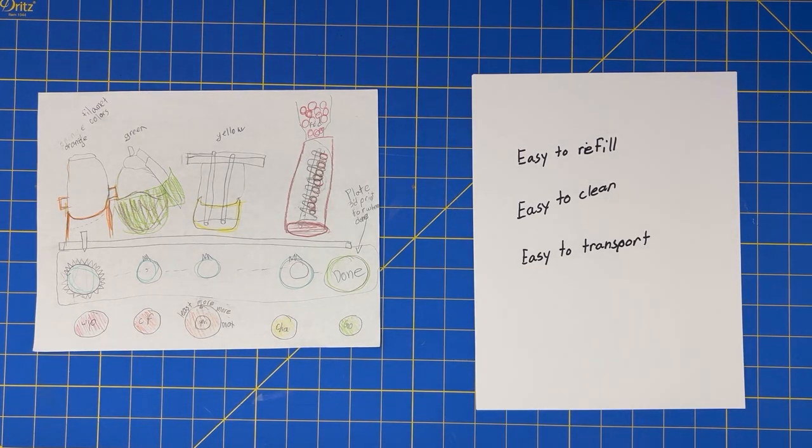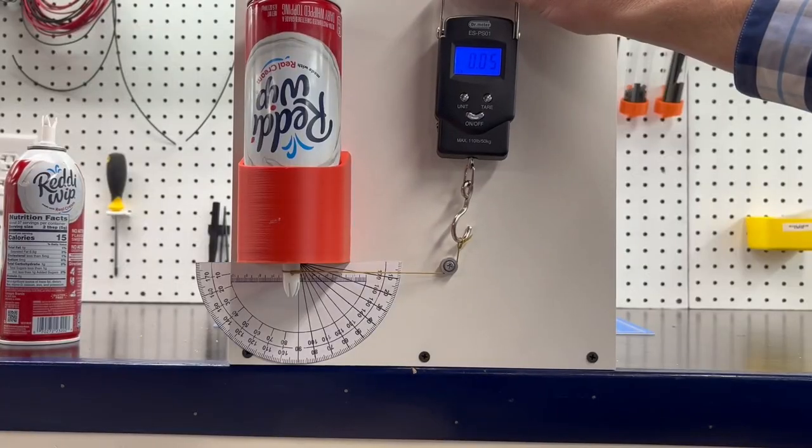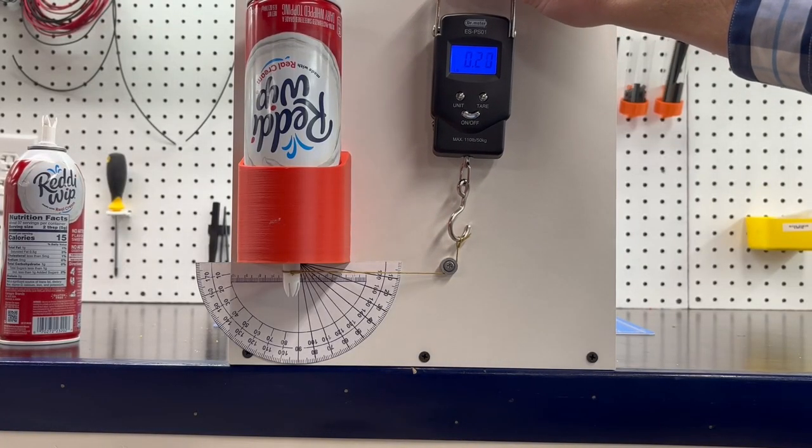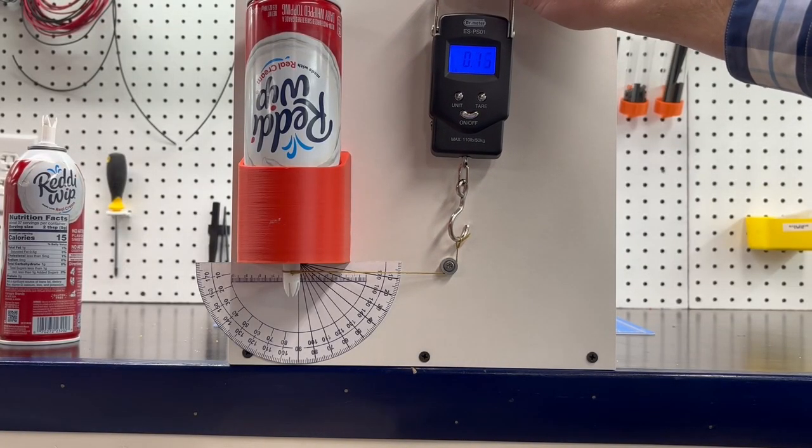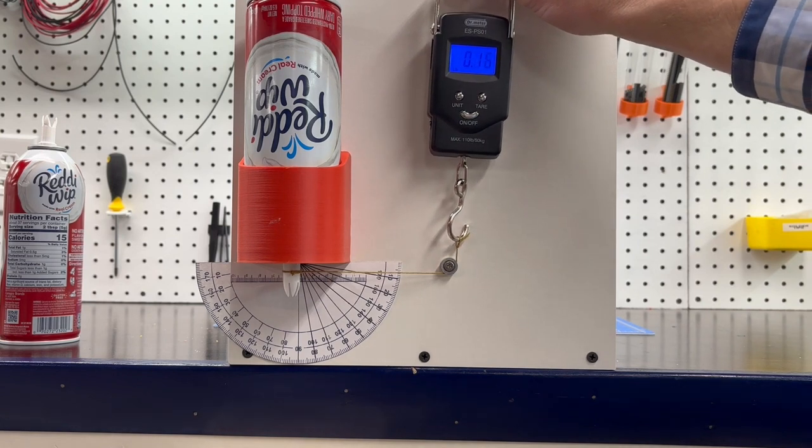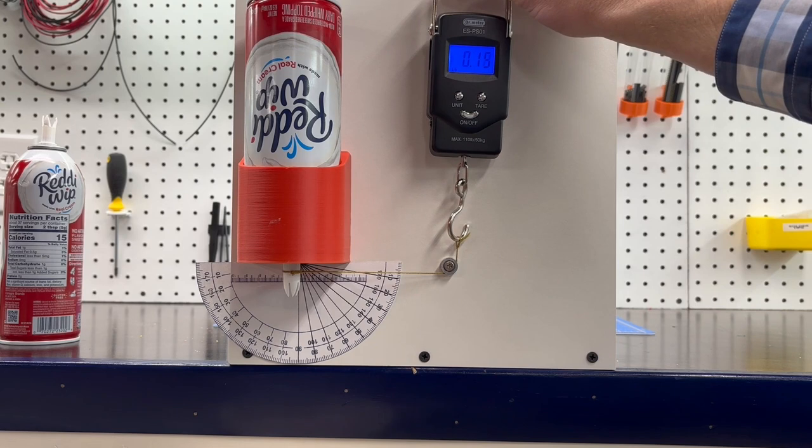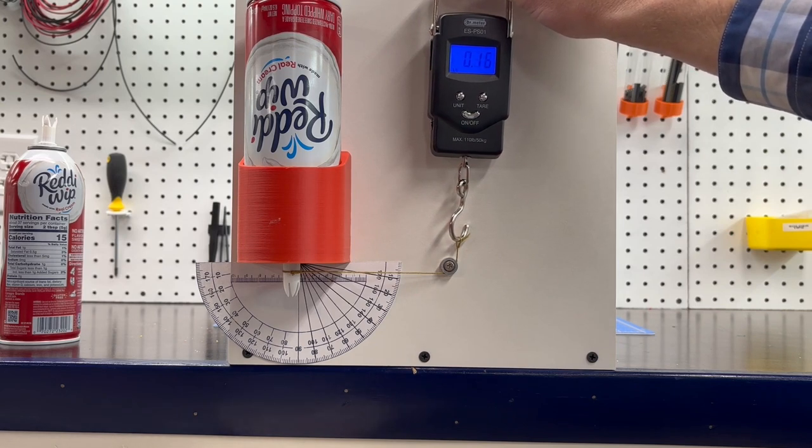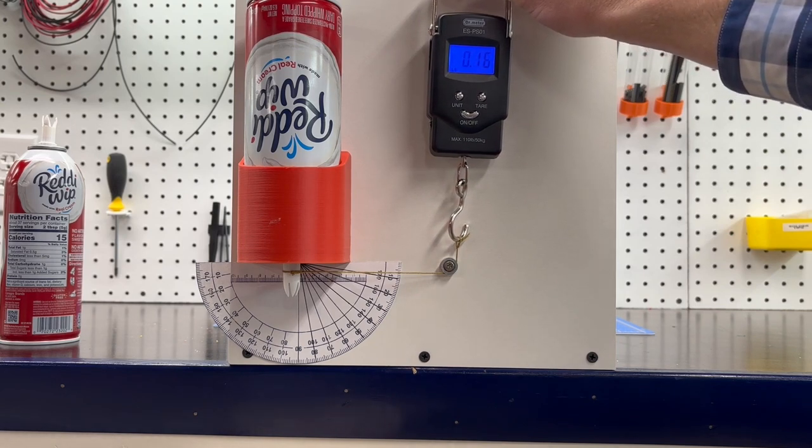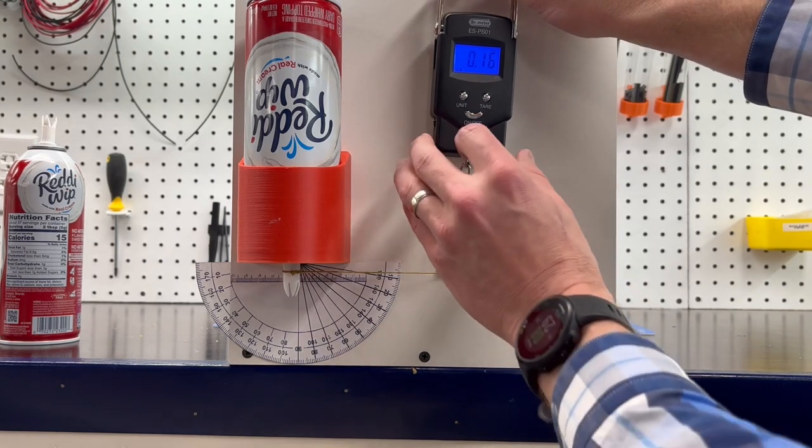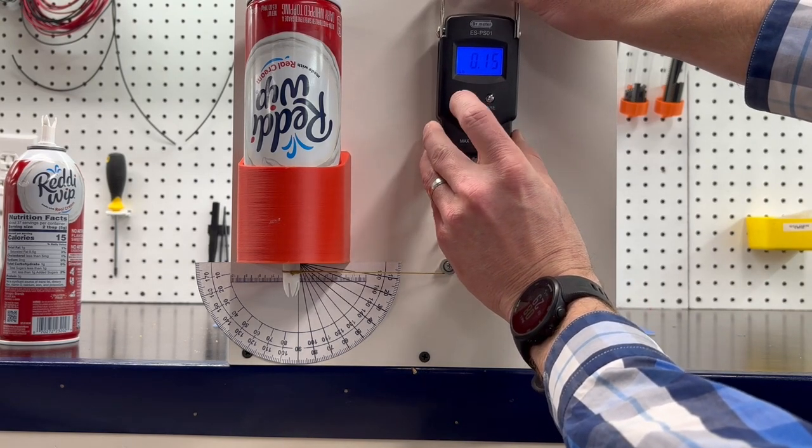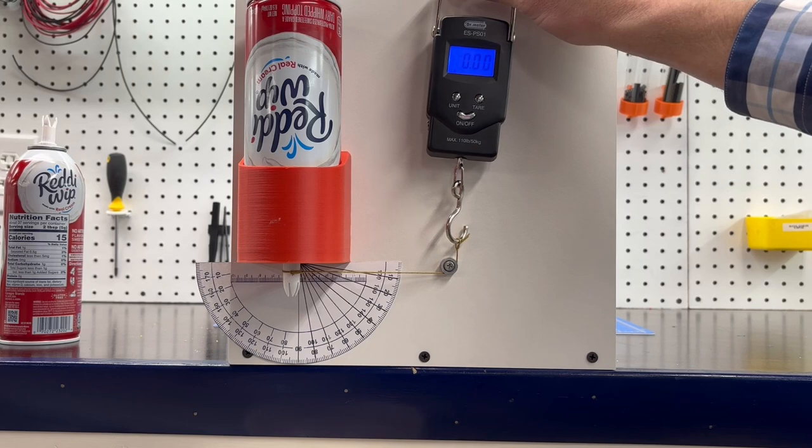All right, so how much force do you think it's gonna take to dispense the whipped cream? Pounds. How many pounds? Two pounds. I think like two to five. Yeah, two pounds, okay. No, five to ten, okay, ready.